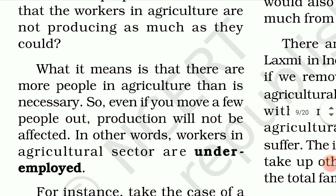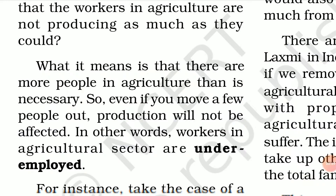So up till now you read that in the primary sector, log jo hai wo zyada employed hoti hai, but unki contribution kam hoti hai. But in the secondary and tertiary sector, they generate more employment and more contribution. What do you conclude from this? It clearly means that agriculture mein log zyada employed hain, but they are not producing according to their potential.